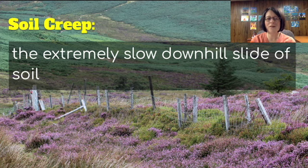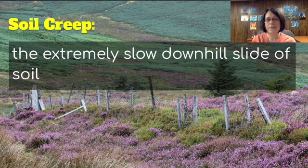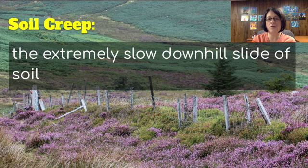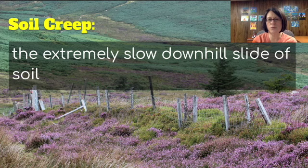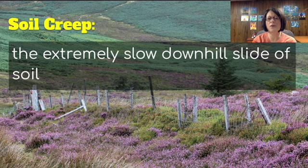Another form of mass wasting is soil creep. This is the extremely slow downhill slide of soil. You can see here in this picture that the fence is not straight — the reason the fence is not straight is because soil creep has happened. One way to prevent soil creep is to have vegetation holding everything, so make sure that vegetation is planted to hold the soil together. Another thing you could do is put in some kind of drainage so that you have less water, although in soil creep there tends to be less water than some other forms, but drainage also helps.